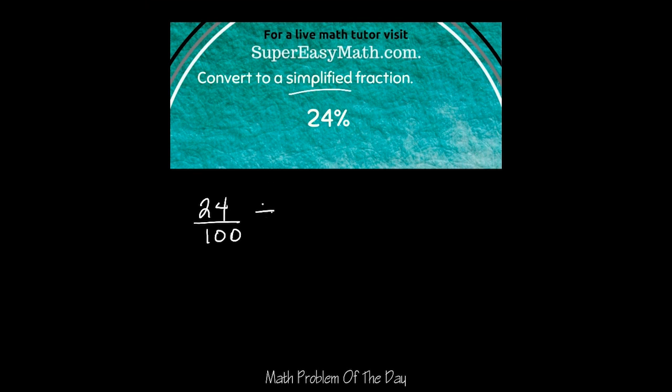So in this case, I can see that dividing by two would work and that would allow me to make my numerator 12 and my denominator 50, but I can see that I can divide by two again and that would give me six over 25. And that is the most simplified form.